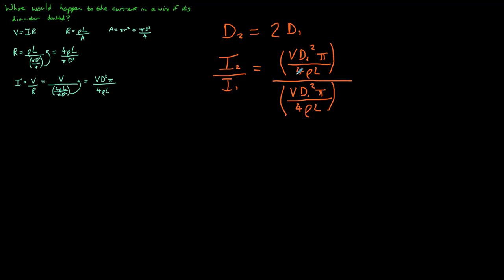So again, let's do our trick from before where the denominator down here can move up to the top and the denominator from the top can move down, and that will just tidy up our equation a little bit. We'll end up with V d2 squared multiplied by pi multiplied by 4 rho L divided by V d1 squared pi 4 rho L.